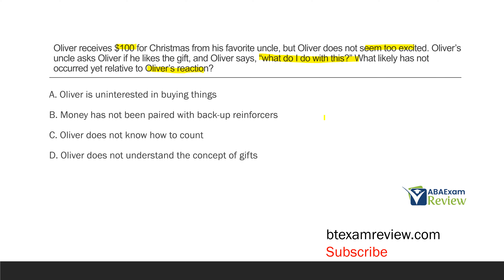B — money has not been paired with backup reinforcers. What needs to happen for that money to gain value? Just like tokens, it has to be paired with backup reinforcers — in other words, items that do hold value. Once Oliver exchanges that $100 for toys or whatever else he buys, that money gains value. C — Oliver does not know how to count. Nothing in the question implies Oliver can't count.